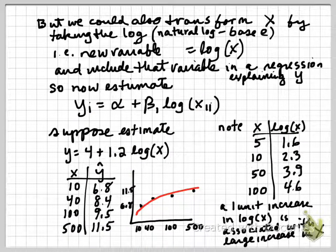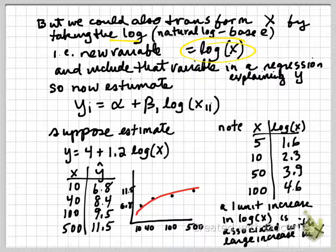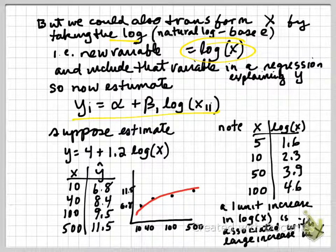So now we want to consider a different transformation. Instead of adding a squared term, we want to take the log of x, and when I say the log, I mean the natural log, base e, and create a new variable that we include in the regression. And that new variable is just the log of x. So we estimate this equation, y equals alpha plus beta times the log of x.